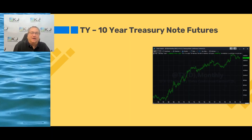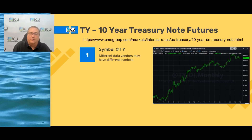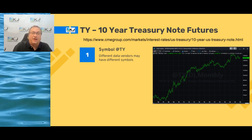We're going to look at a trading strategy for TY, the 10-year Treasury note futures. TY is the symbol that TradeStation uses, but different data vendors may have different symbols — it's also commonly referred to as ZN. So you might need that to call it up on your particular platform. If you're using TradeStation it's TY, and I've given you a link so you can go to the CME Group website for more information on the contract.